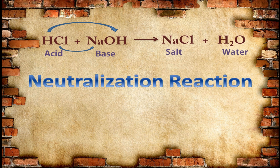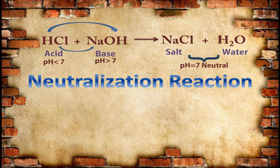This type of reaction is called a neutralization reaction because the products formed — NaCl and water, salt and water — are both neutral with a pH value of 7. The pH of an acid is less than 7 and the pH of a base is greater than 7. By the reaction of these two reactants having different pH values, two neutral products are formed, therefore this reaction is known as a neutralization reaction.